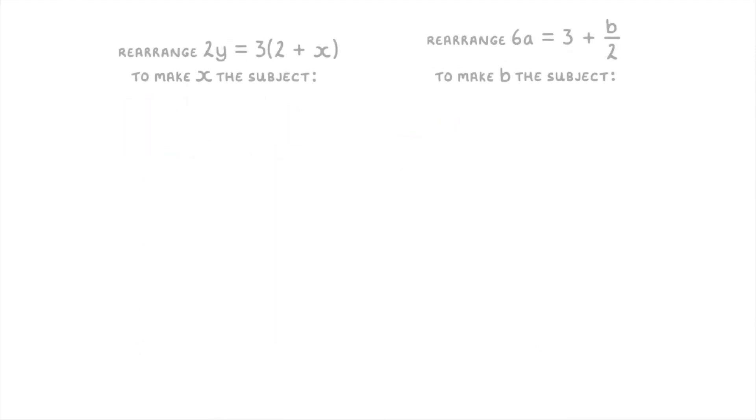Let's try a couple more. For this first one, the x that we're trying to get by itself is inside a bracket, so the first thing we need to do is expand the bracket by multiplying the 3 by the 2 and the x, giving us 2y equals 6 plus 3x.